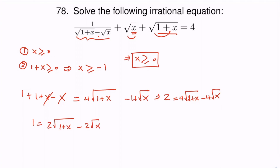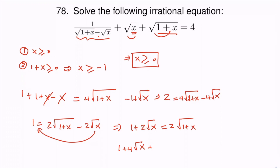Now if we move this term to the other side we will get one plus two square root of x equals two times the square root of one plus x. Now let's square both sides, so this time we will have one plus four square root of x plus four x equals four times one plus x.